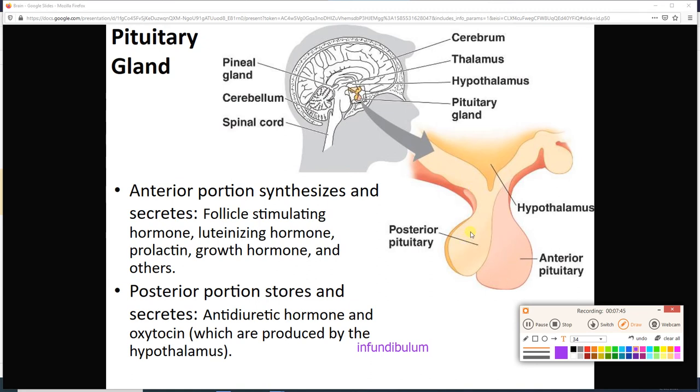Notice that the pituitary gland has an anterior part and a posterior part. The anterior part is going to make its own hormones and release them, including follicle-stimulating hormone, luteinizing hormone, prolactin, growth hormone, and others. The posterior portion actually gets hormones that are made in the hypothalamus, and they travel down axons to the posterior pituitary, and then the posterior pituitary stores them and releases them. Two hormones get that treatment. Those are antidiuretic hormone and oxytocin.